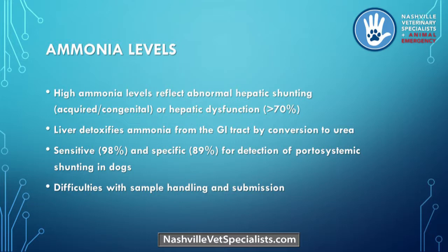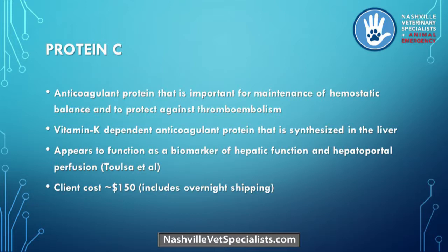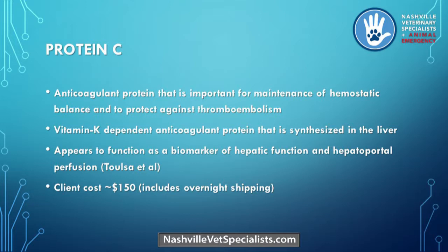Protein C — this is a test Dr. Wong is a big fan of, and I've become a big fan because it gets me out of trying to do a shunt hunt ultrasound on little toy breed dogs. Protein C is a vitamin K-dependent anticoagulant protein synthesized in the liver, important in maintenance of hemostatic balance. Based on a study from around 2006 at Cornell by Dr. Tolsa and Dr. Sharon Senter, it was proposed as a good biomarker of hepatic function. Client cost including overnight shipping to Cornell is about $150, versus an ultrasound around $400.